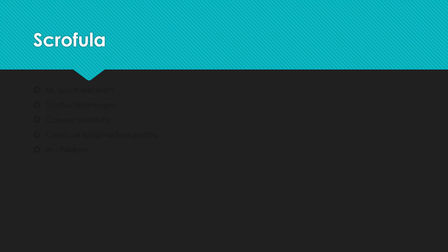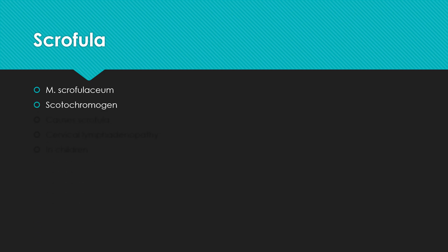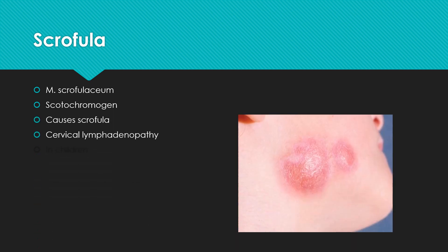Scrofula is a disease caused by Mycobacterium scrofulaceum. This Mycobacterium scrofulaceum is a scotochromogen, meaning it can produce pigment in both light as well as in the dark. In scrofula, the patient presents with cervical lymphadenopathy, which can be seen in the picture. Mostly children are affected with scrofula compared to adults.